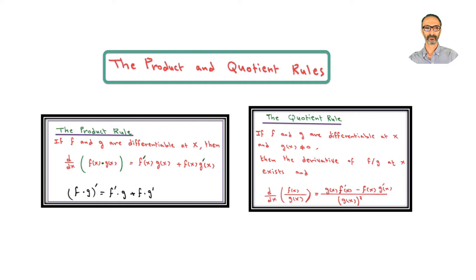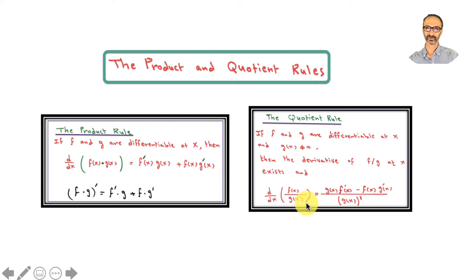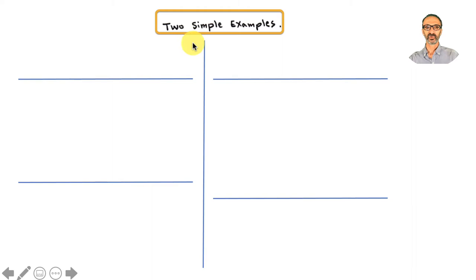One important comment before we move on: remember from previous videos we talked about f plus g — the derivative of the sum is the sum of the derivatives. That does not work for products or quotients; it's not that simple. These are lecture videos and it's hard to cover everything and show proofs, so I'm trying to be practical and show you these rules with simplified examples.